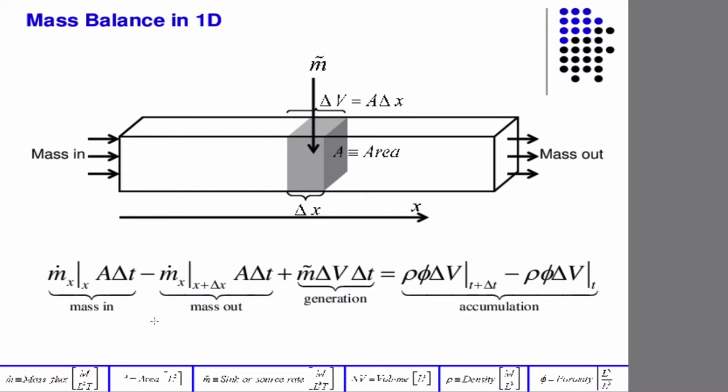And the finite time delta t. So now, he also didn't say the rate of, right? So instead, now he says mass in minus mass out plus generation equals accumulation.